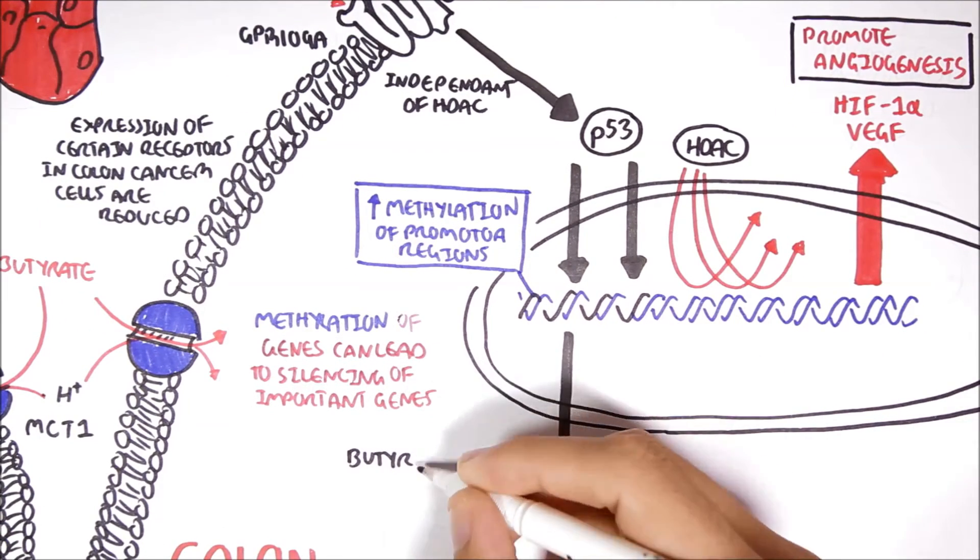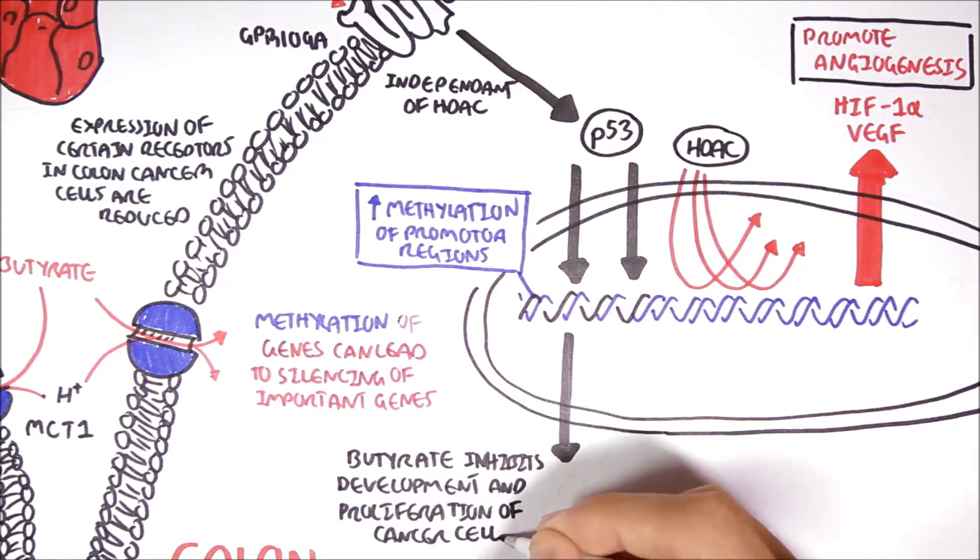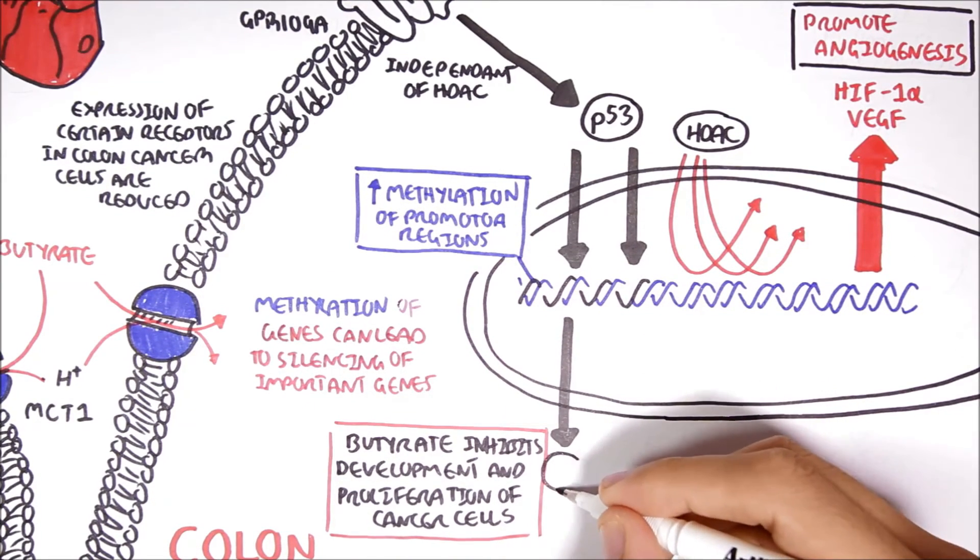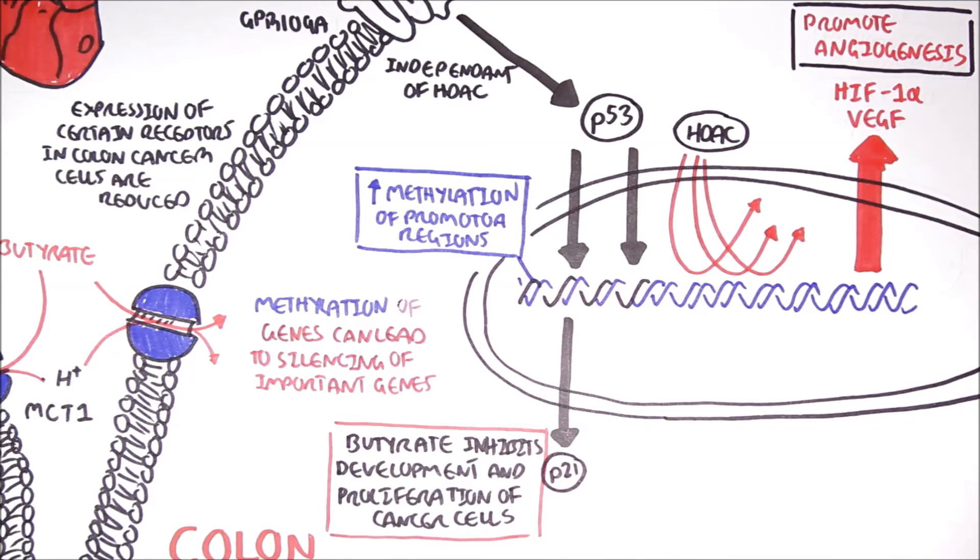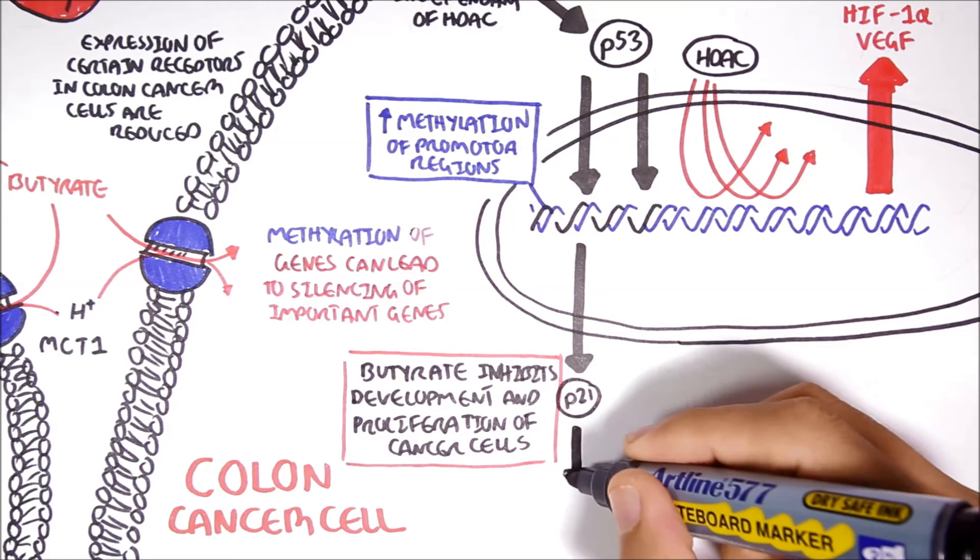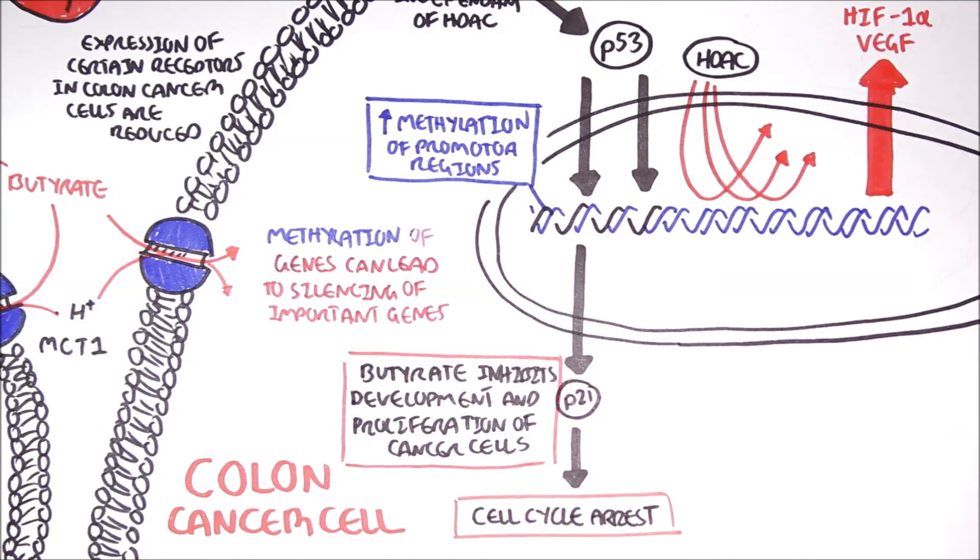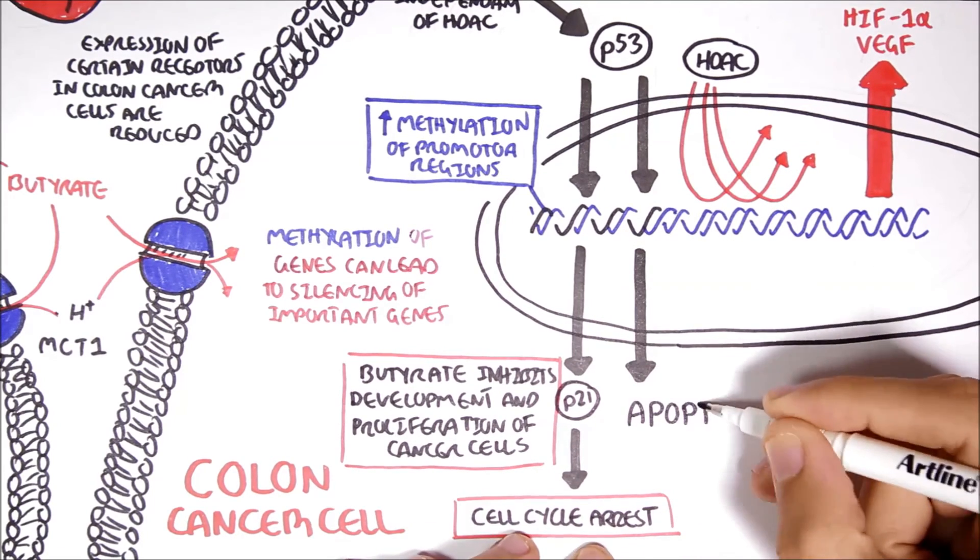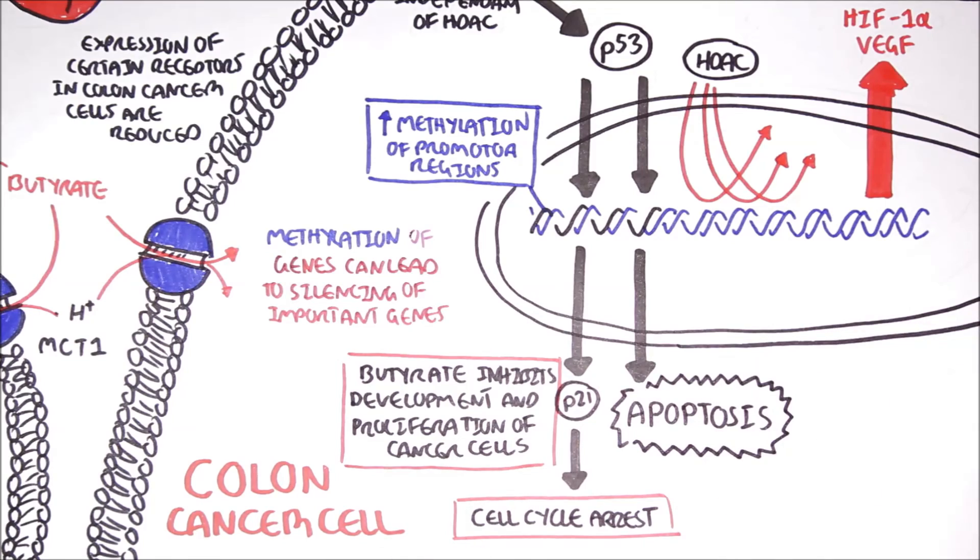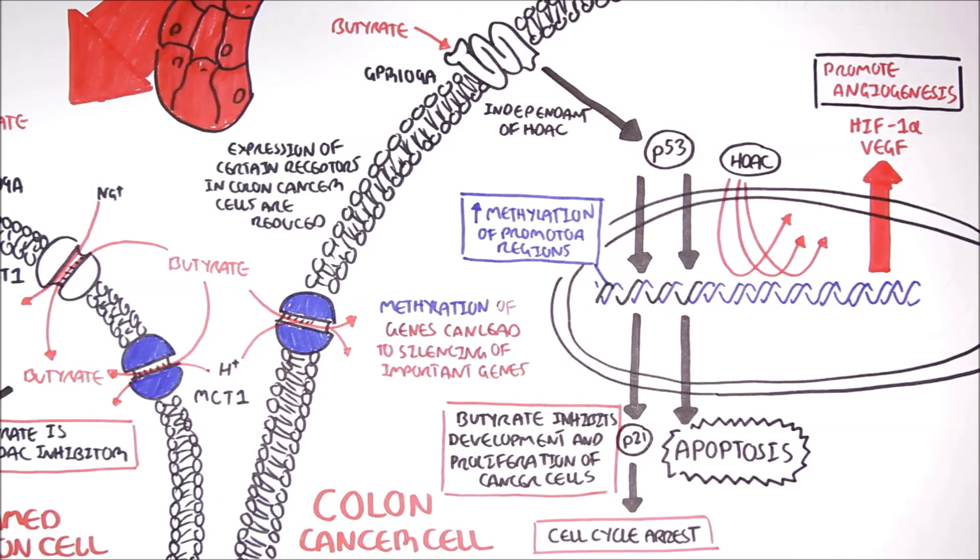P53 is a transcription factor that regulates the expression of the stress response gene and many antiproliferative processes. Butyrate inhibits the development and proliferation of cancer cells because the activation of the P53 transcription factor will activate genes that encode for proteins such as P21. P21 acts as a stop signal for cell division. This is good because P21 will reduce cell proliferation, one of the hallmarks of cancer. Further, activated P53 can initiate apoptosis through activation of pro-apoptotic proteins.